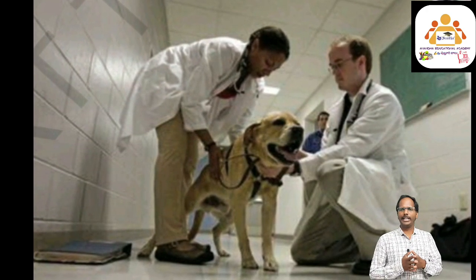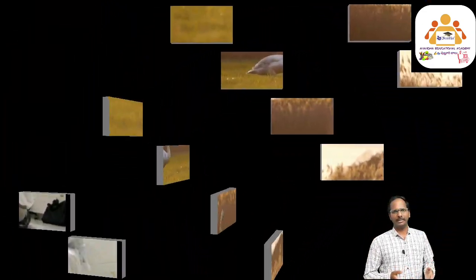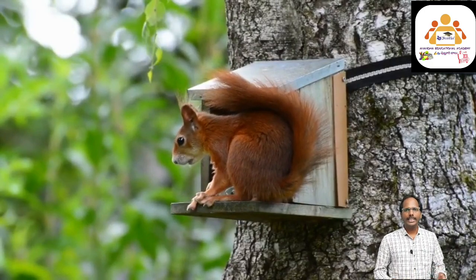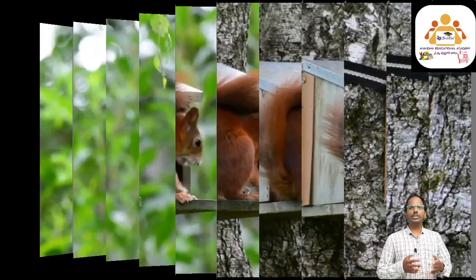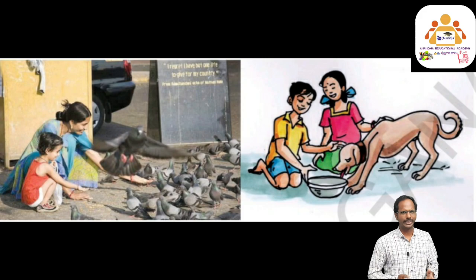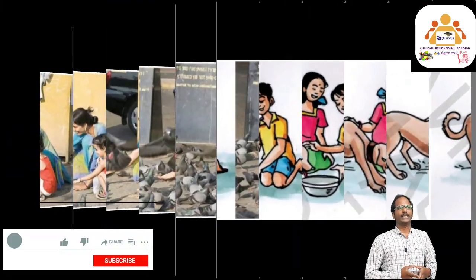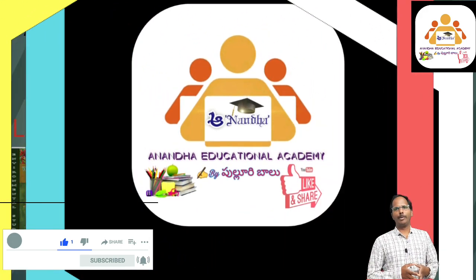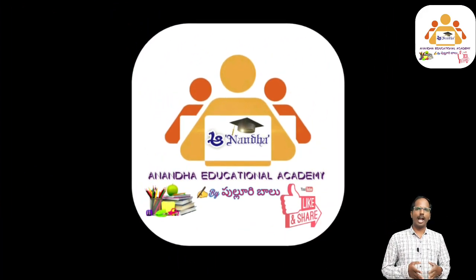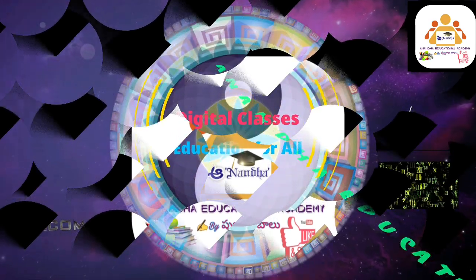Animals are also living things like us. We should not hurt them. We should provide food and water to them. We should identify their needs and help them every day. How do you feel when you find dogs, cats, cattle and other animals hungry? We should not tie them. We should feed birds and animals and take care of them and their young ones. This is about Lifestyles of Animals and Biodiversity Lesson Part 1. In the next session, we will learn about the Biodiversity topic and the lesson exercises. Thank you children, thank you very much.